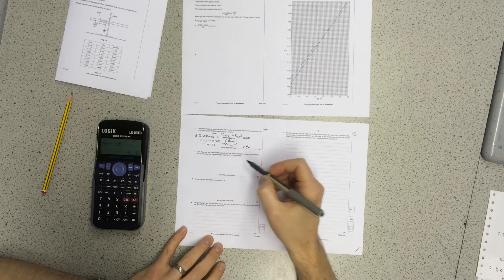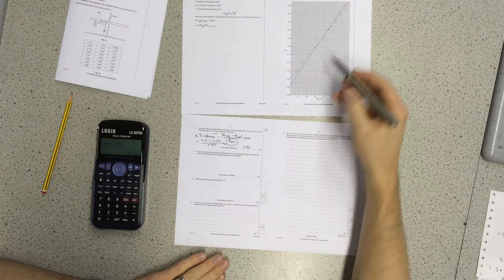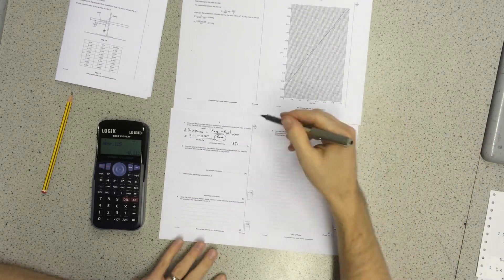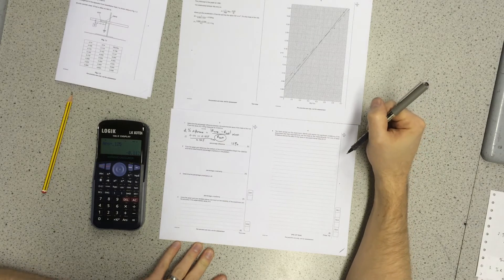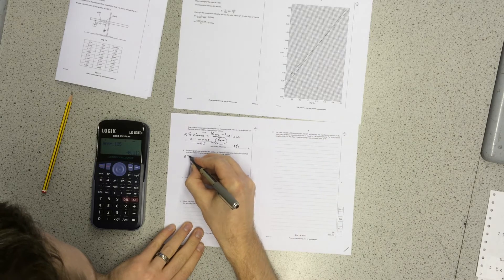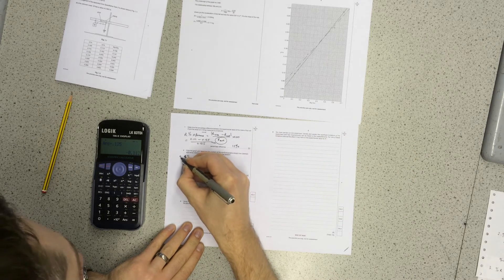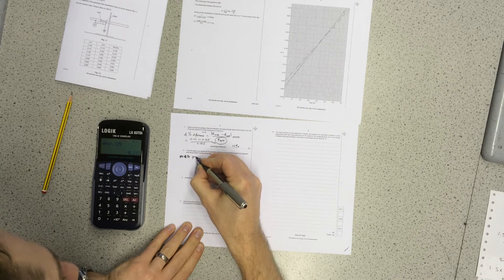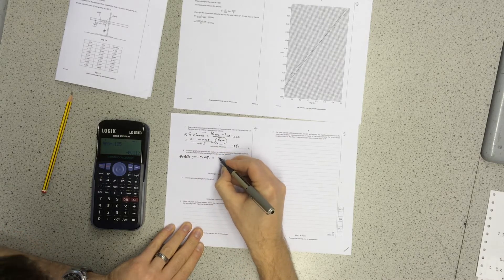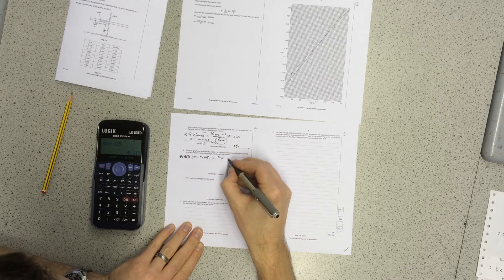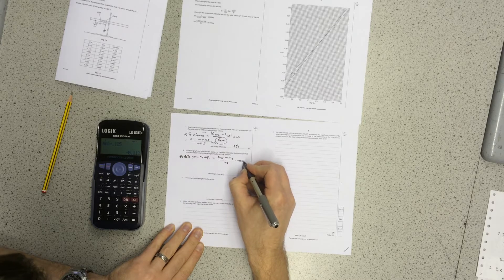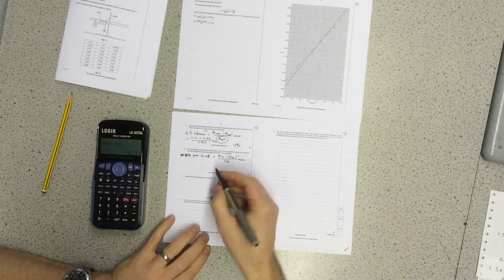Next, from the graph grid, determine the gradient of worst acceptable straight line, which is the dashed one, and hence determine the percentage uncertainty in the gradient. The percentage difference in the gradient is the percentage uncertainty in the gradient. So it's another percentage difference calculation. This is gradient. So this one, I do the worst gradient minus the best over the best. Again, it's a modulus.